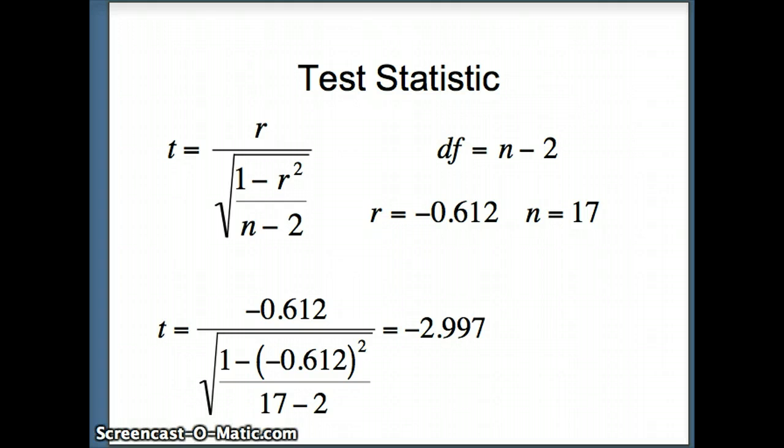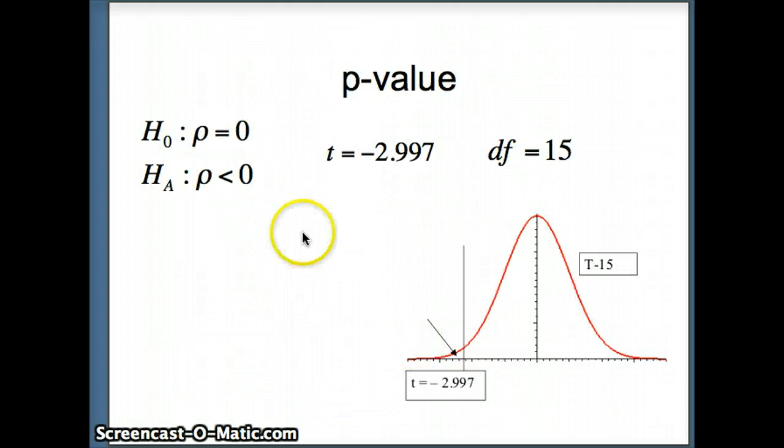Now we need to find our p-value. We have a one-tailed test. Rho is less than 0. T is negative 2.997 with 15 degrees of freedom. So we need to find the amount of area to the left of negative 2.997.